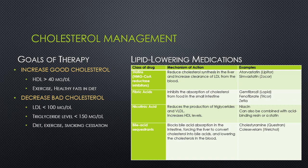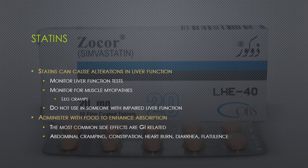Let's look very specifically at the statins. Simvastatin, atorvastatin, and lovastatin are medications commonly prescribed to lower lipids in patients who either have high cardiovascular disease risk or high lipid levels in their blood. Statins can cause an alteration in liver function, so it's important to monitor liver function tests, and they also can cause muscle myopathies, so look for things like leg cramps. They should not be used in someone who has impaired liver function, and they're not used during pregnancy.